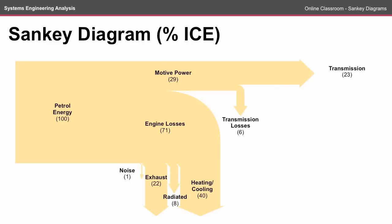When drawing a Sankey diagram, it's important to make sure that the relative size of the arrows represent the size of the losses. This is a visual description of how much energy makes it to the transmission, and relatively, you can see that the engine losses contribute to a significant loss in the system.